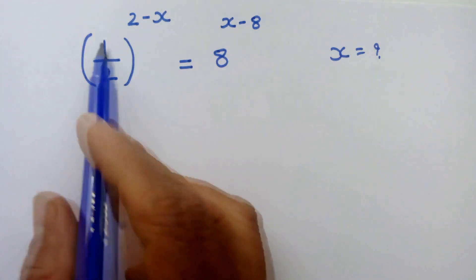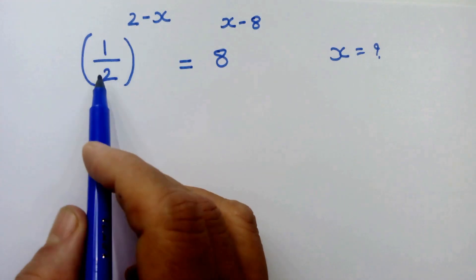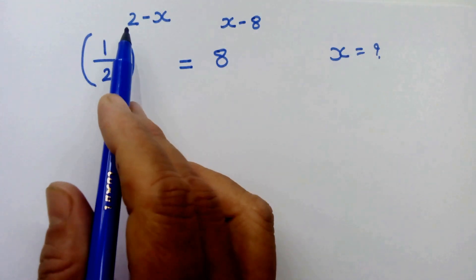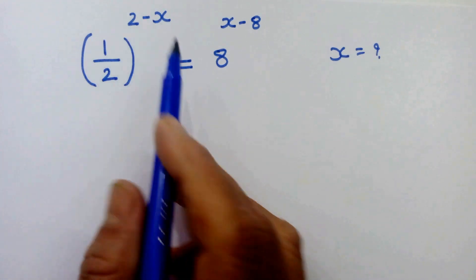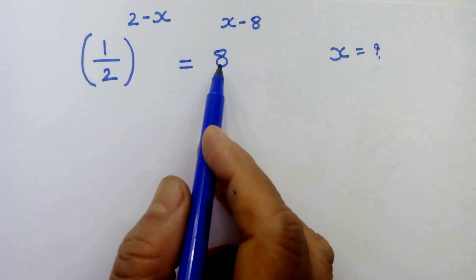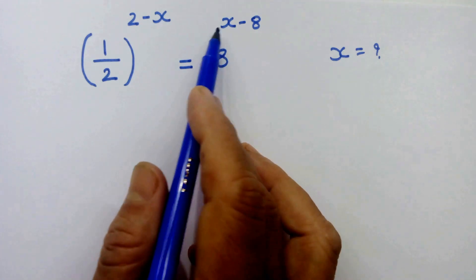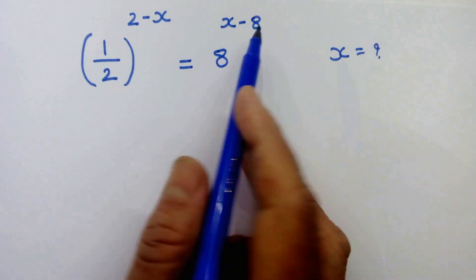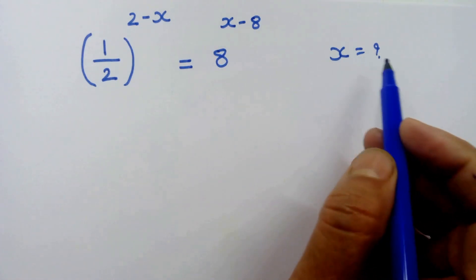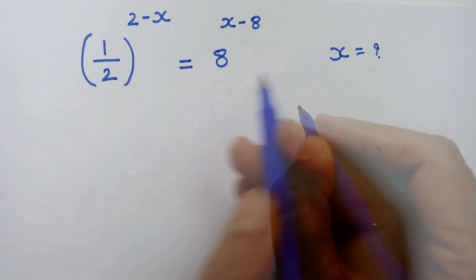Hello friends, here we have 1 upon 2 whole raised to 2 minus x is equal to 8 raised to x minus 8, and let's solve for x.